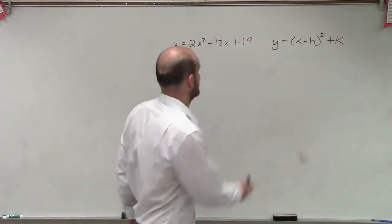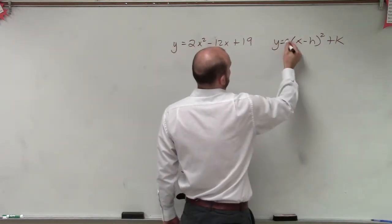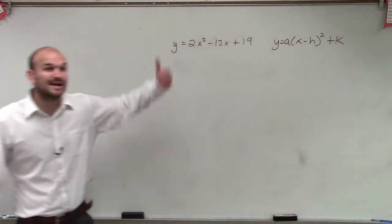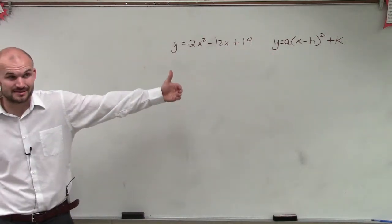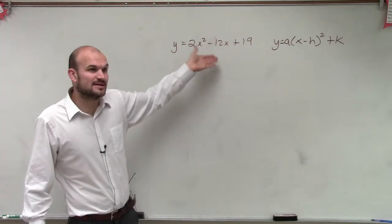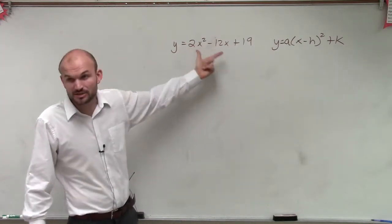Sorry, I forgot our a. So we need to write it so it looks like that. We need to write this as a binomial squared. We need to have a binomial squared somewhere, so I'm going to have to use the process of completing the square.